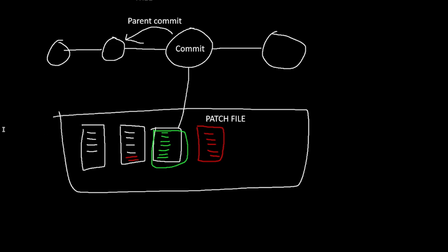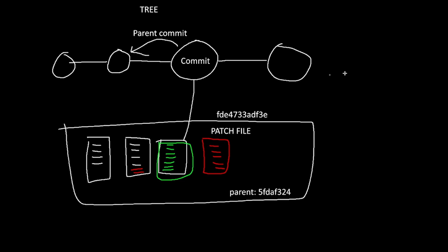Each commit has an ID — something like a hex string — which is the unique identifier that describes the commit. And each commit also has a parent ID. So back to trees — a tree is a set of commits and it has a start.